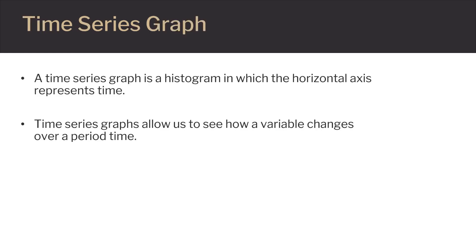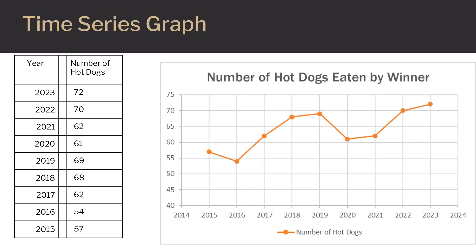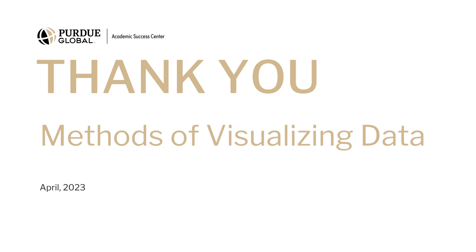Our last type of graph is known as a time series graph. A time series graph is a histogram or line graph in which the horizontal axis represents time. These graphs allow us to see how a variable changes over a period of time. Here you see a time series line graph of the total number of hot dogs eaten by the winner of the hot dog eating contest in the years from 2015 to 2023. Across the bottom, you see the variable is time, with years increasing from left to right. From this graph, you can see that while each individual contest result bounces around a bit, the overall trend is upwards.